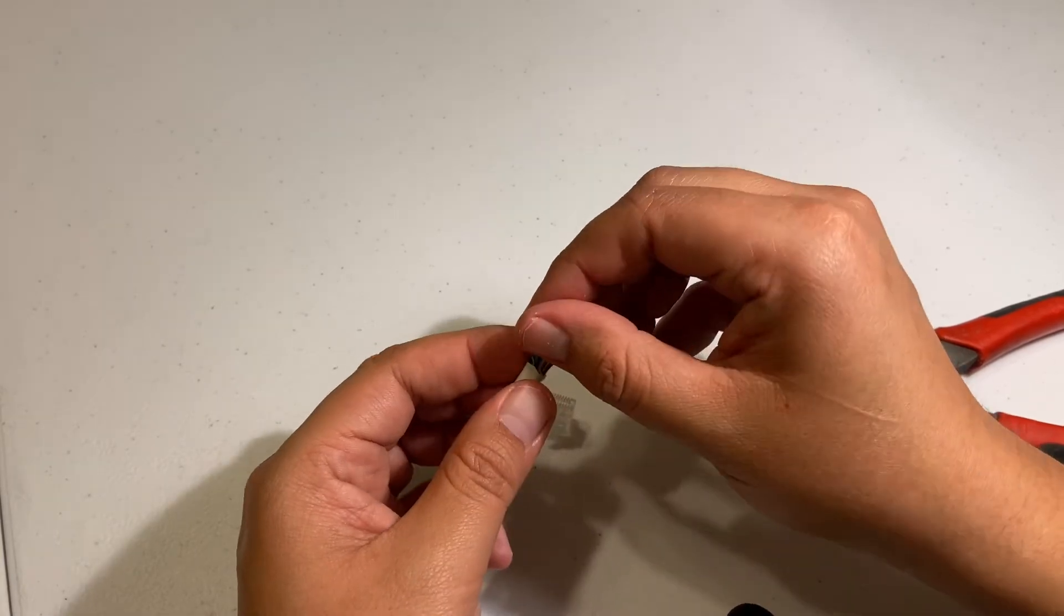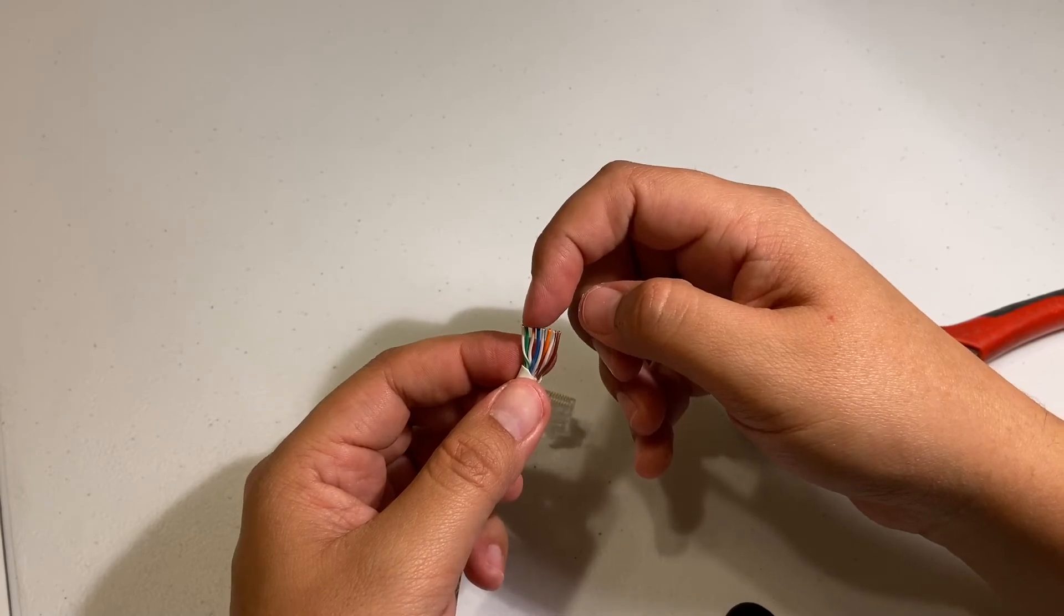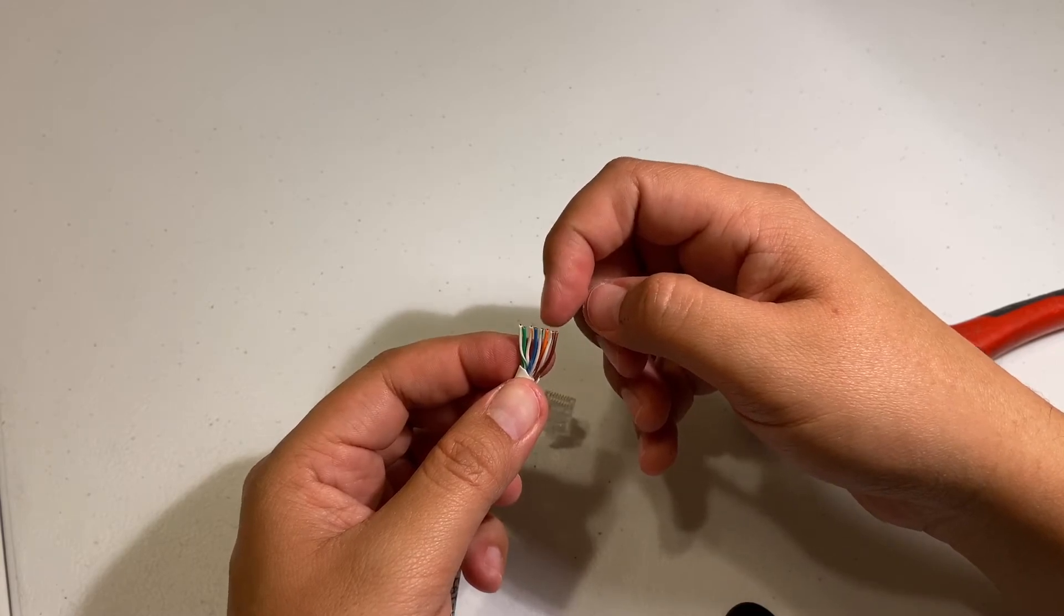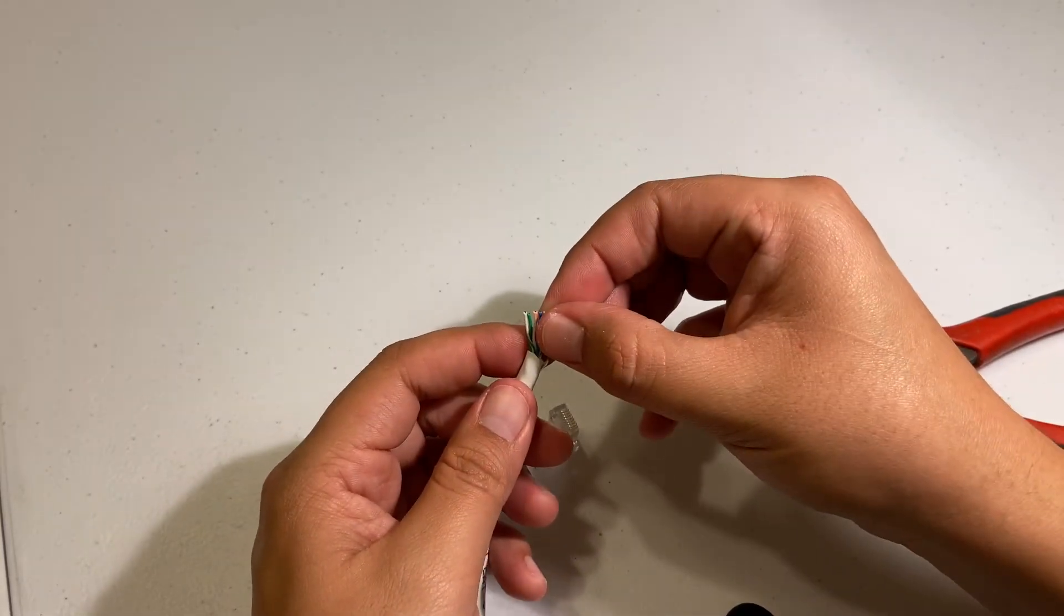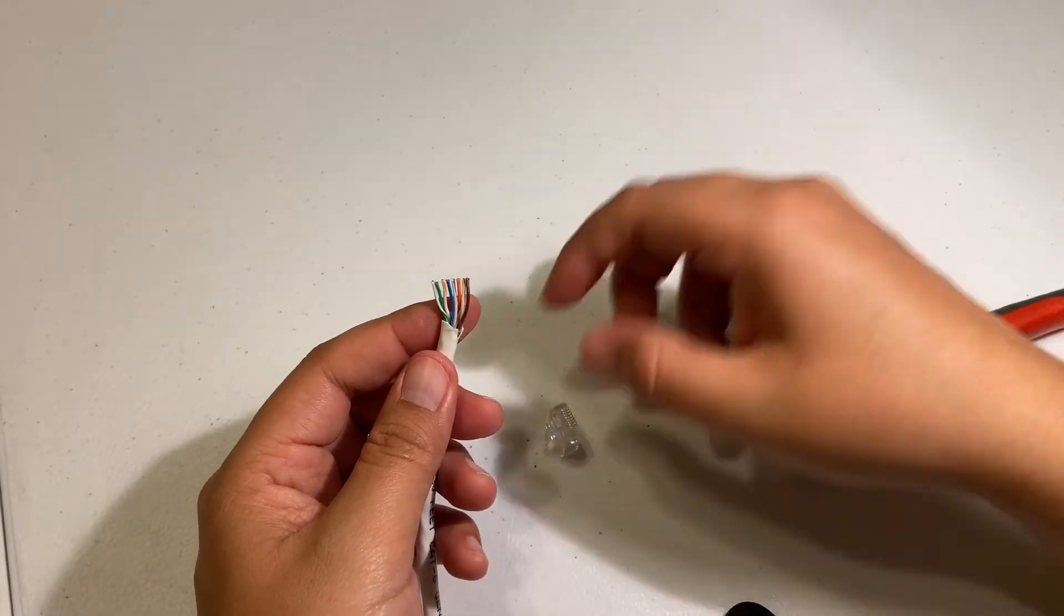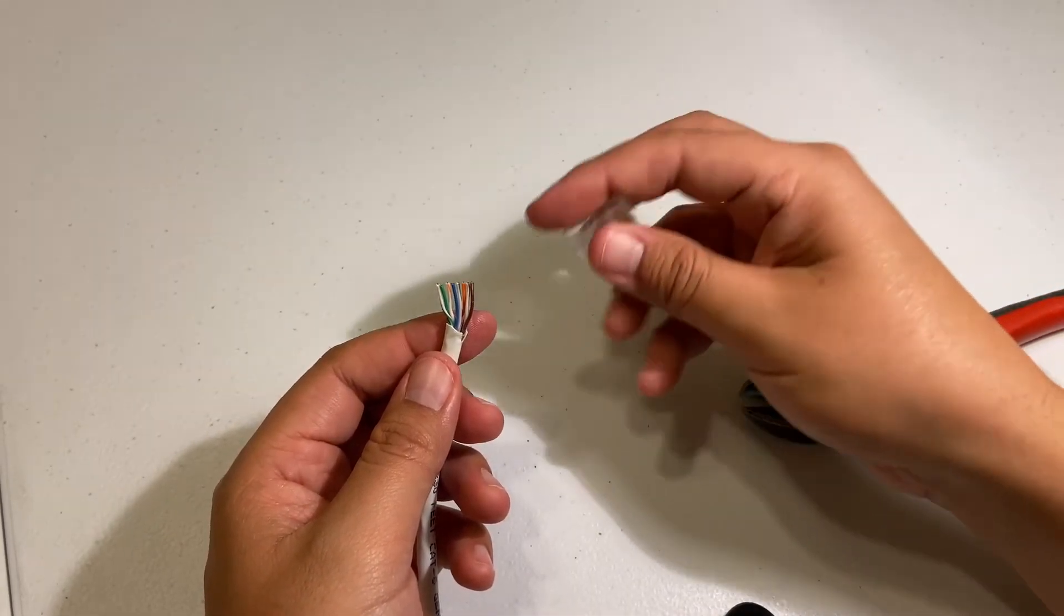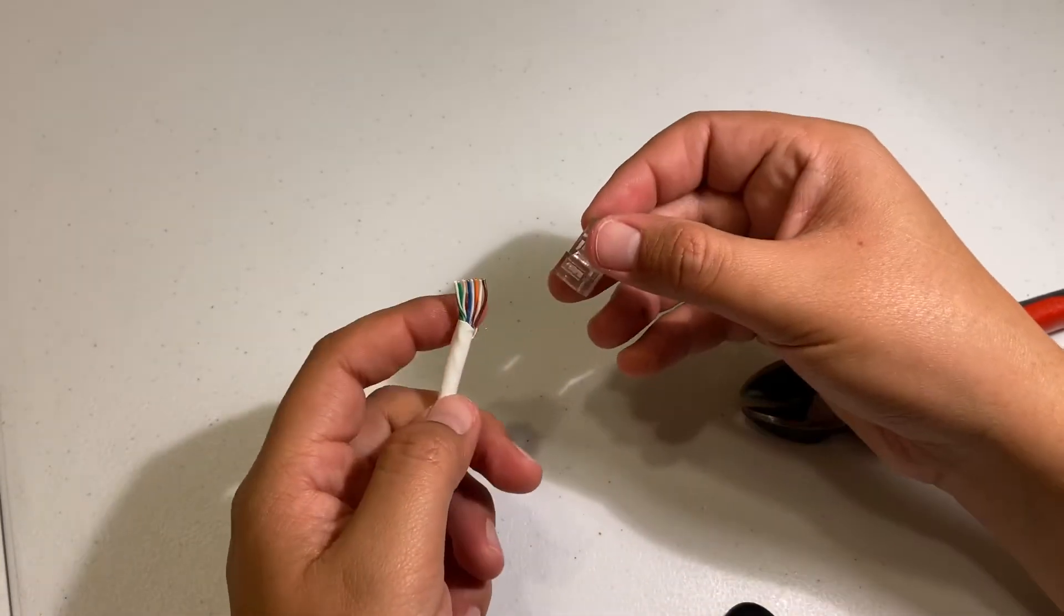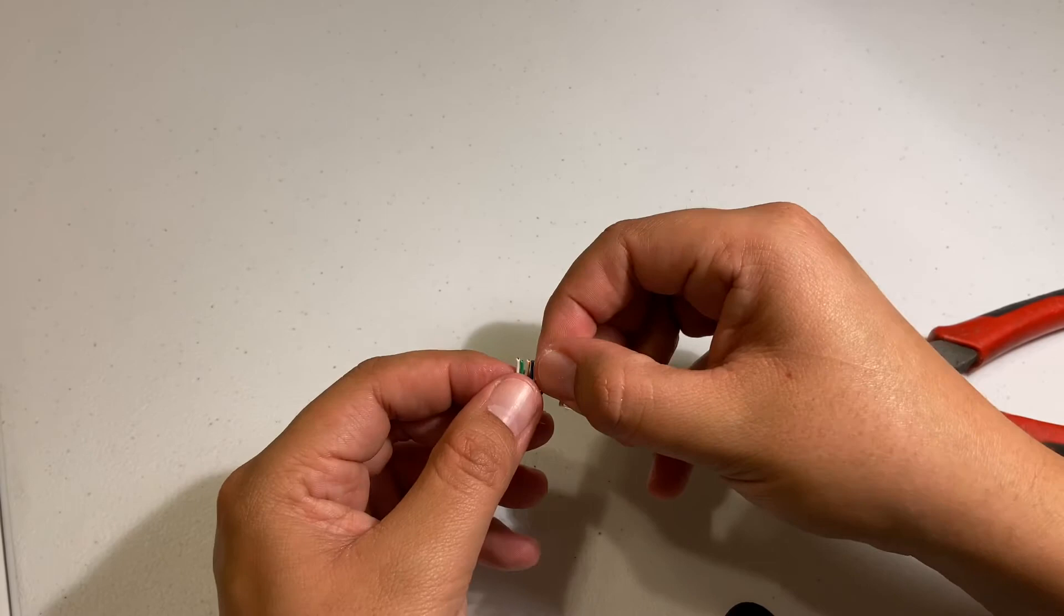So once you have all the wires ready, I'm just gonna count them again just to make sure: light green, green, light orange, blue, light blue, orange, light brown, and brown. Then we're gonna slide it in there just to see how it's gonna look. And now what I always do is I put the brown on the right side - this is what other people or videos don't say - we put the brown on the right side and then the little tab, this thing, pointing down. That's how I always go by that.